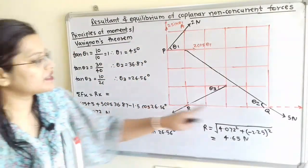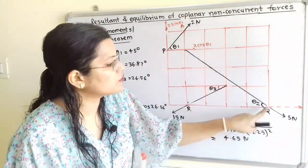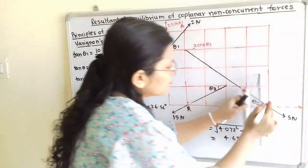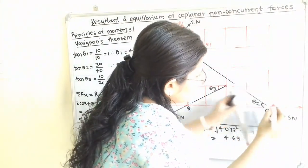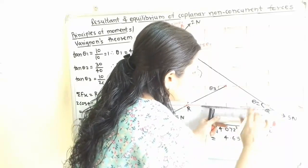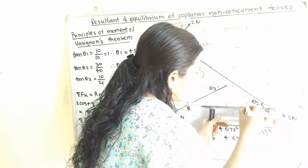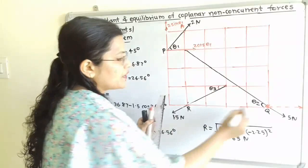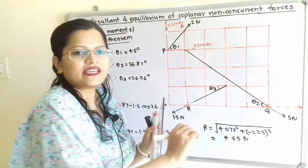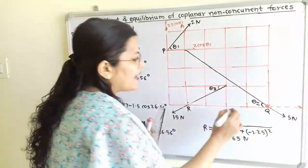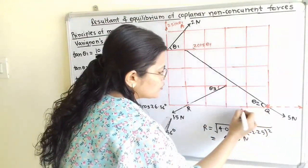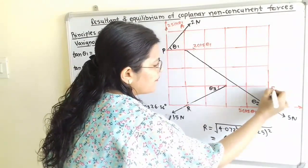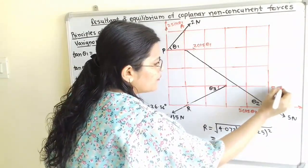Next we will resolve the 5N force at point Q. The vertical component and horizontal component are shown with arrows. This horizontal component is nearby to angle θ2, so it is 5cos(θ2), and here is 5sin(θ2).